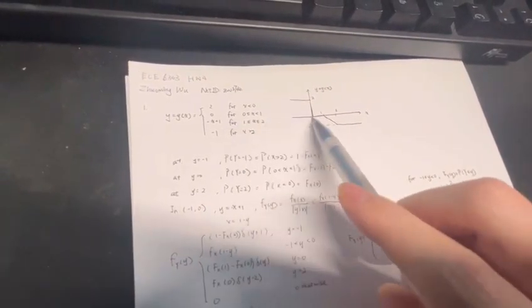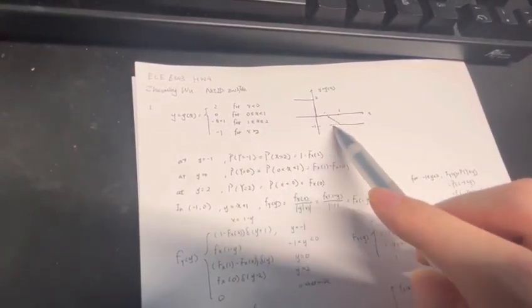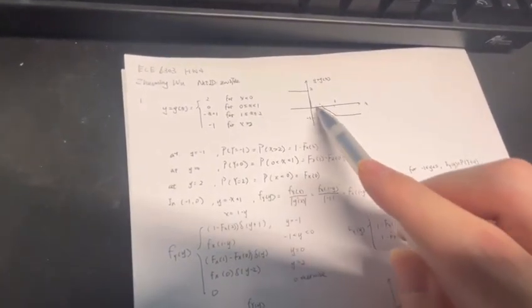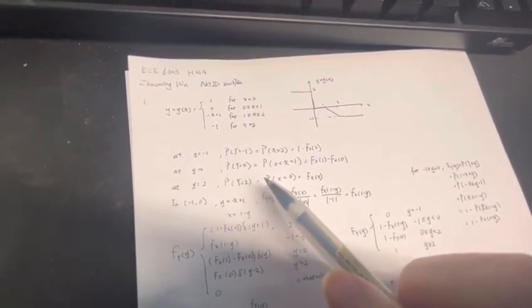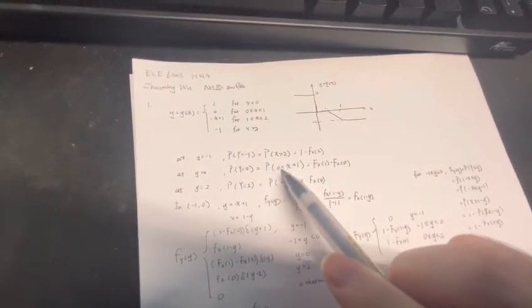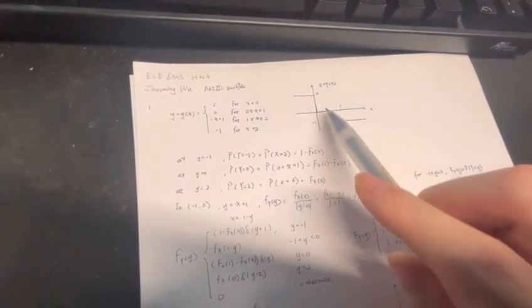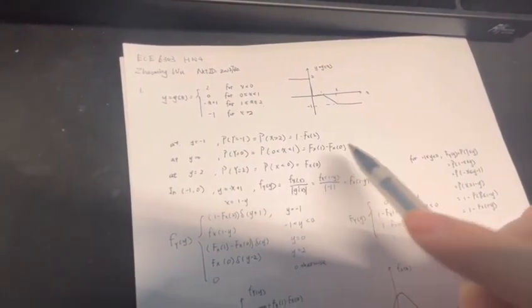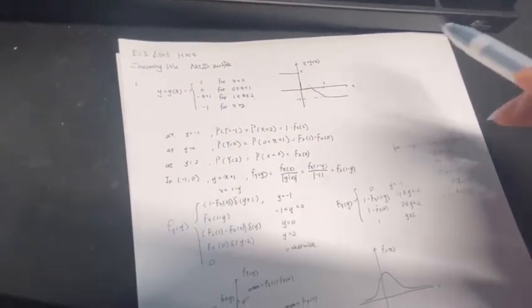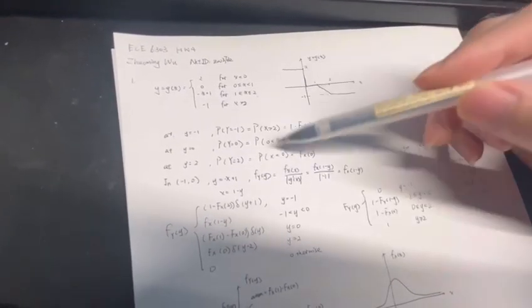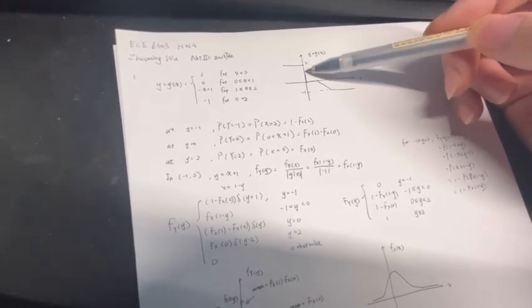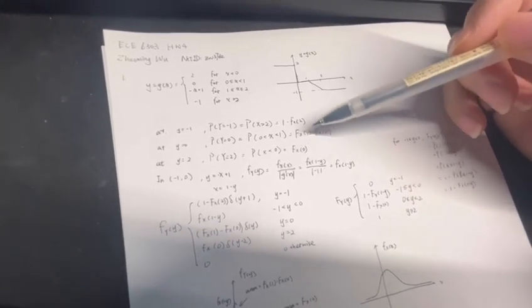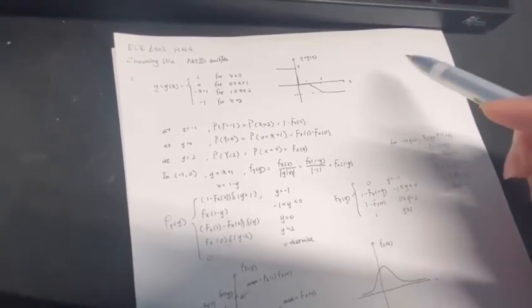When y equals zero — this line right here — the probability of Y equals zero equals the probability of X being greater than zero and less than one, which equals F_X(1) minus F_X(0). When y equals two, the probability of Y equals two equals the probability of X less than zero, which equals F_X(0).